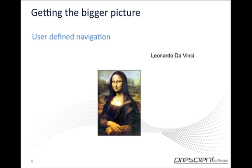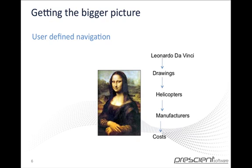Another example: starting from the same place, we go from the Mona Lisa to have a look at some of Leonardo's drawings. We have a look at the one on the helicopter, and think this is interesting — let's have a look at some more designs of helicopters. We go from there to looking at manufacturers of helicopters, and from there we look at the cost of possibly buying a helicopter and quickly move on ad infinitum. So here we've got two very disparate journeys, very different, but coming from the same starting point. Depending on what the universe of information is, the semantic relationships will be defined as such. And here we get a very clear picture on how we can navigate through information in a very human way.